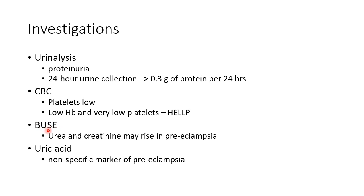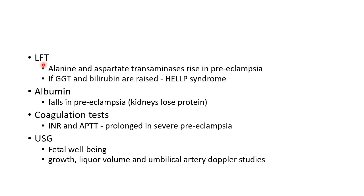Blood urea and serum electrolytes should be done; urea and creatinine may rise in preeclampsia. Uric acid is a non-specific marker of preeclampsia. Liver function tests should be done — alanine and aspartate transaminases rise in preeclampsia; if GGT and bilirubin are raised, suspect HELLP syndrome. Albumin falls because the kidneys lose protein. Coagulation tests — INR and APTT — are prolonged in severe preeclampsia.